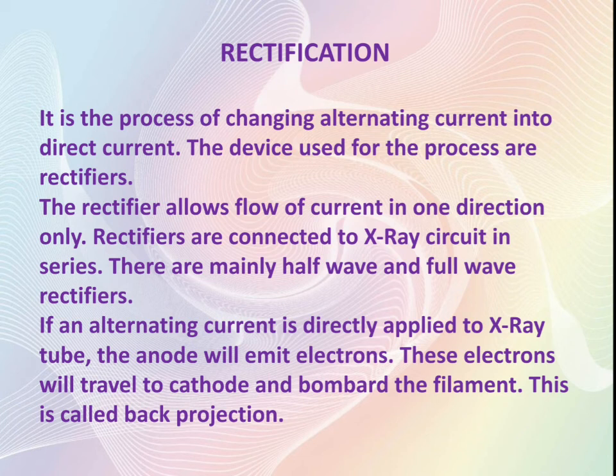This phenomenon is known as back projection. So in order to avoid back projection, we supply direct current to the x-ray tube. That means we can only supply direct current to the x-ray tube, and for that purpose we use rectifiers to convert the alternating current to direct current.